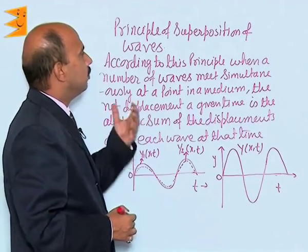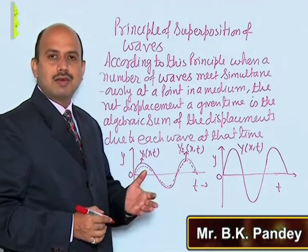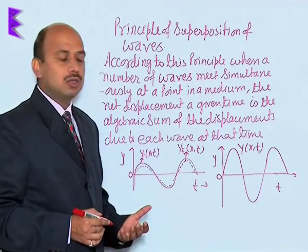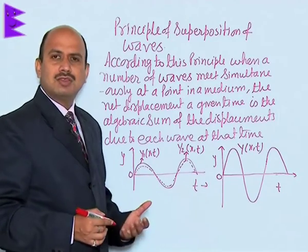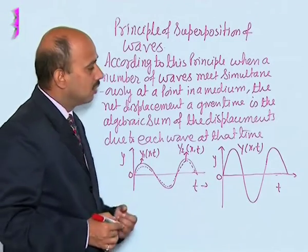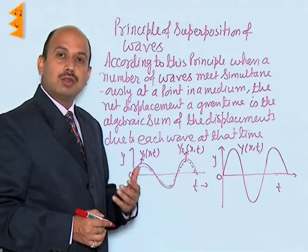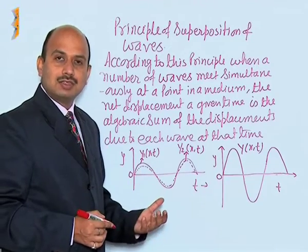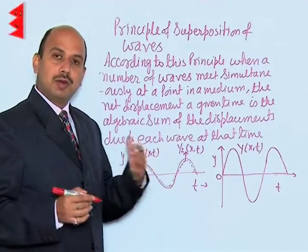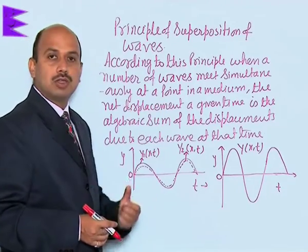Now we will see the principle of superposition of waves. Till now we were studying only about one wave travelling in one direction - what is its equation of motion, its frequency, velocity, angular frequency, and every parameter. Now here we have to consider two waves. Suppose there are two or more than two waves travelling in one direction, or maybe in opposite directions. These waves superimpose on each other, so now we have to see the principle of superposition of waves.